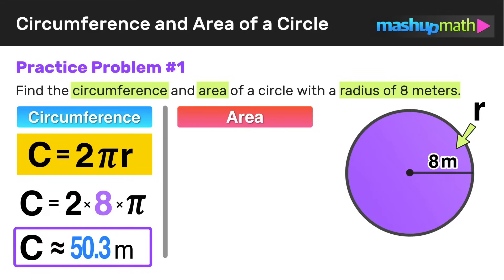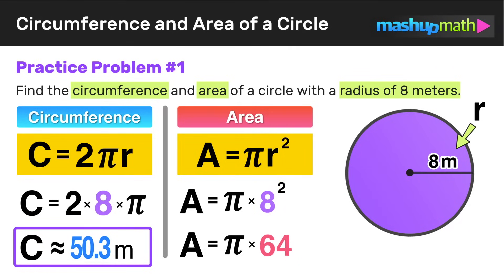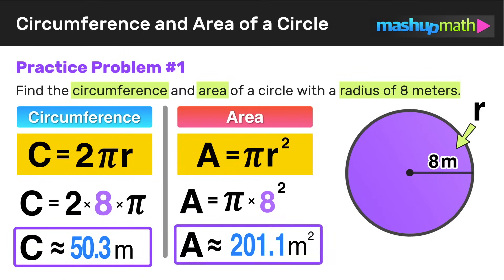Now let's find the area. We use the formula a equals pi r squared, substituting r with 8: a equals pi times 8 squared. We know that 8 squared equals 64, so we have a equals pi times 64. If you want the answer in terms of pi, the area equals 64 pi. For an exact answer, multiply 64 times pi, which is approximately 201.1 meters squared.